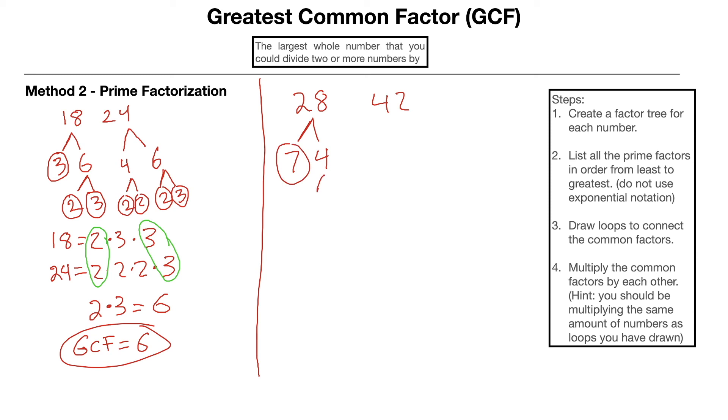So we could say this is 7 times 4. 7 is a prime number so I would circle it. 4 can split into 2 and 2. Those are both prime. 42 could split into 6 and 7. 7 is prime. 6 could split into 2 and 3. Those are both prime.